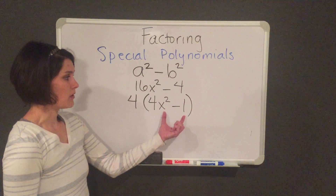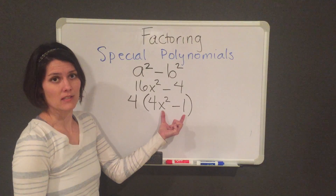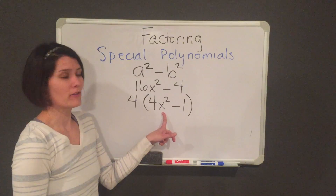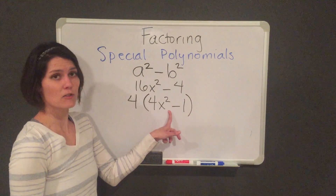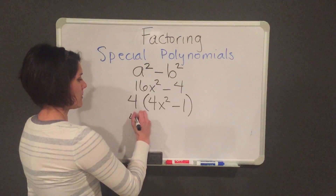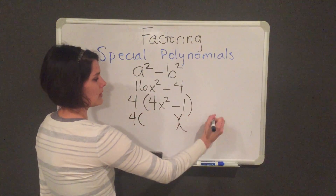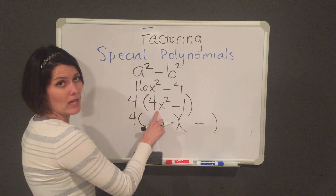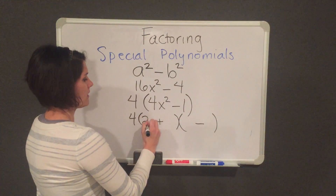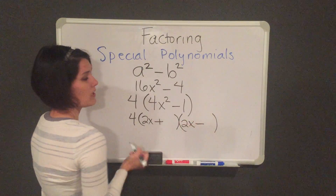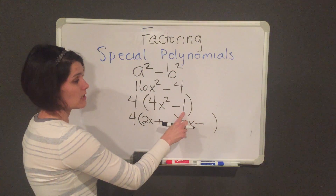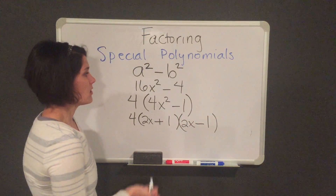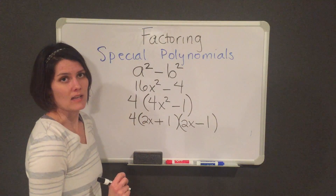Now you look to see what is left over. I actually still have a difference of two squares — I have a subtraction, 4x squared is a perfect square, as is 1, so I can actually factor this again. My answer will be 4, and I'm going to open up two parentheses, one is positive and one is negative. I'm going to take the square root of my first term, which would be 2x, and put it in the first spot. Then I'm going to take the square root of 1, which is just 1, and put it in the second spot. So you need to make sure to check for the greatest common factor as well.